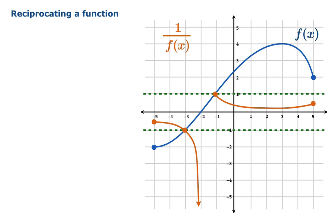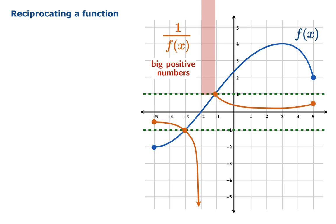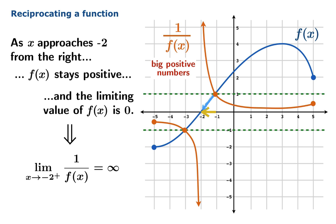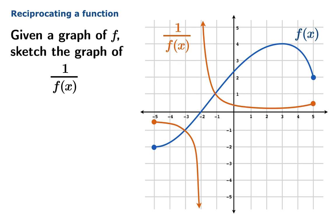You can play the same game from the right. These small positive numbers will reciprocate to big positive numbers, and as you approach negative 2 from the right, the function values of f are positive and get closer to 0. So reciprocating these tiny magnitude positive numbers gives us huge magnitude positive numbers. The limiting value of 1 over f as x approaches negative 2 from the right is infinity. Here's our completed sketch of the graph of 1/f — this is a skill that's pretty handy to have.